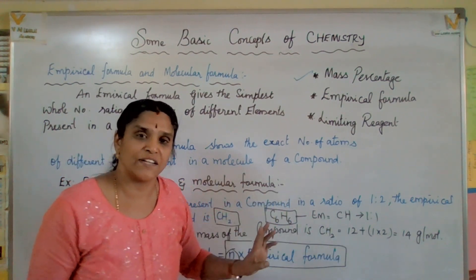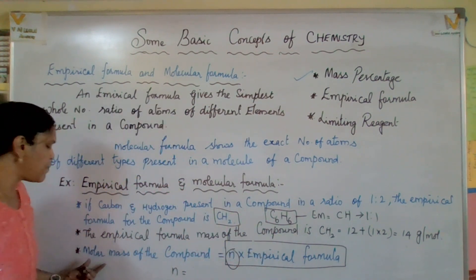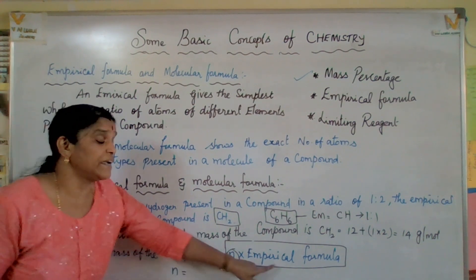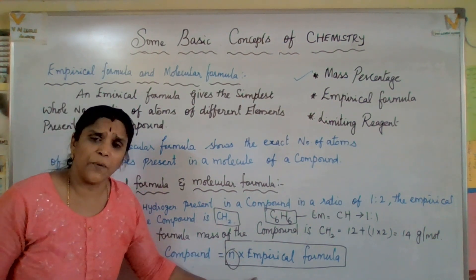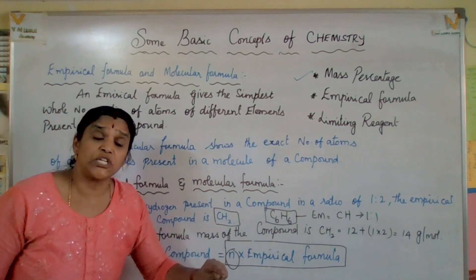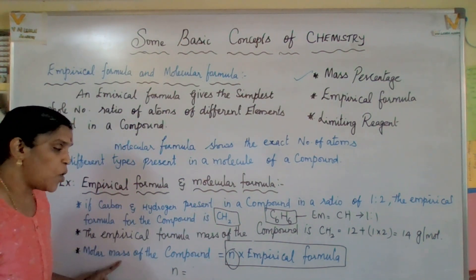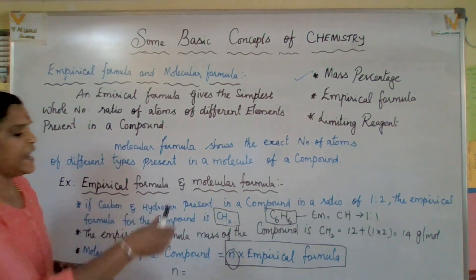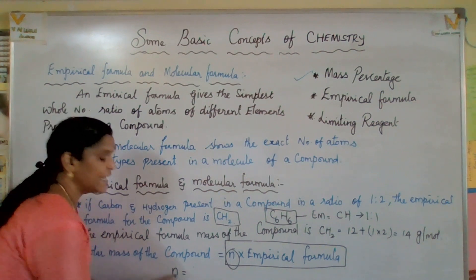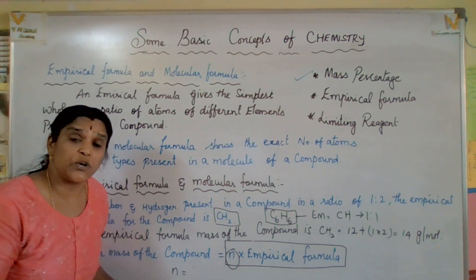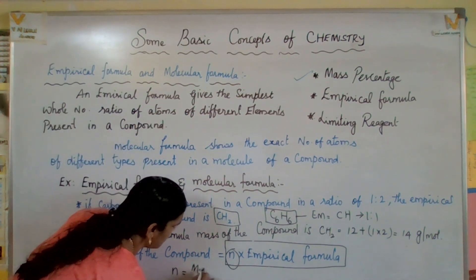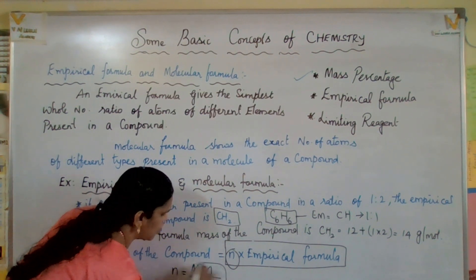To find the molecular formula, you need to identify N. N is the ratio of molar mass to empirical formula mass: N = molar mass divided by empirical formula mass. Once you have N, the molecular formula = N × empirical formula.